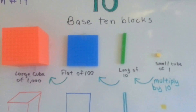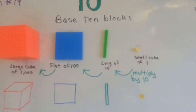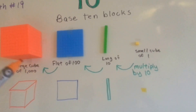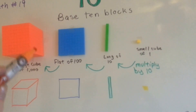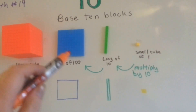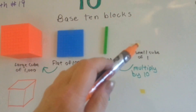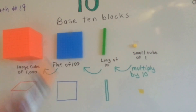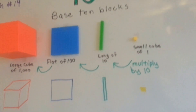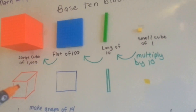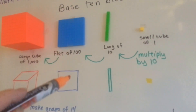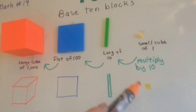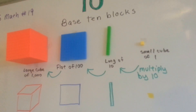Here are our base 10 block units. A lot of kids see them at school, but if you haven't seen these before, I'll explain. This is a big block of 1,000. This is a flat of 100, this is a long of 10, and that's one small cube — so there are 1,000 of these little cubes inside the big block. In my math, I'll use a blue square to represent 100, a long green bar to represent a long of 10, and a little yellow square to represent the small cube.